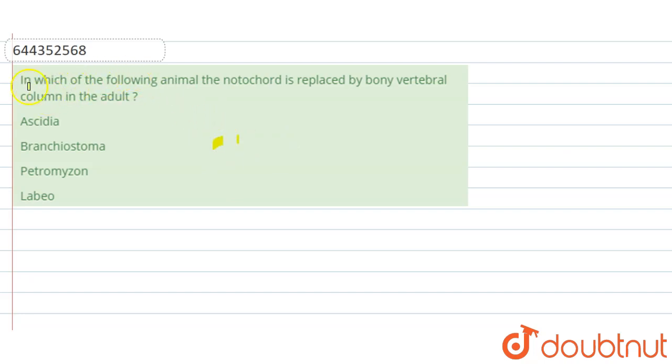In which of the following animals the notochord is replaced by bony vertebral columns in the adults? The options are: Ascidia, Bronchiostoma, Petromycin, and the last one is Labio.